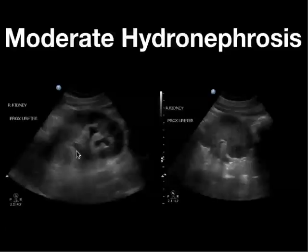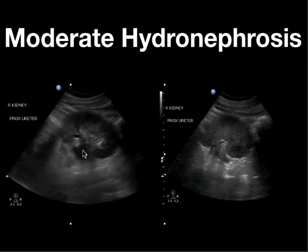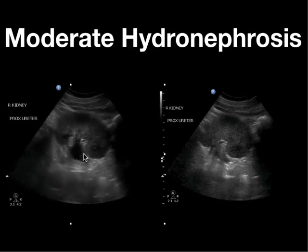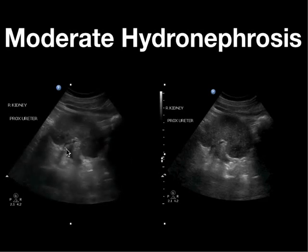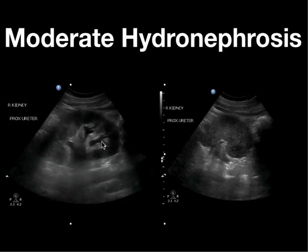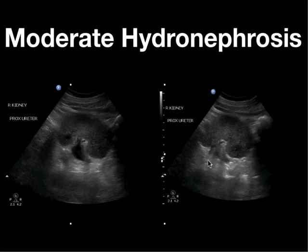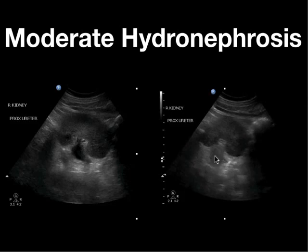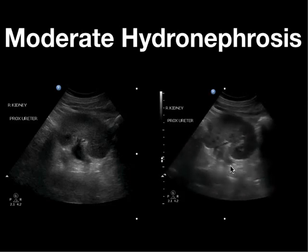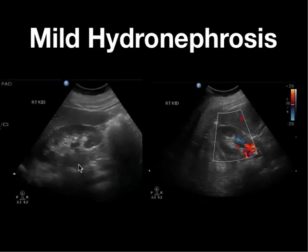Here's a patient with moderate hydronephrosis — you can see the dilated renal pelvis, the minor calyces all connecting and draining into the renal pelvis, and a bit of the proximal ureter. Here you can see evidence of the offending stone — this was a patient who had a proximal UPJ stone.